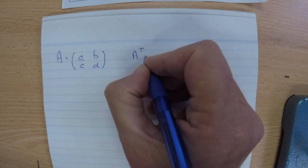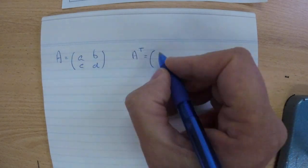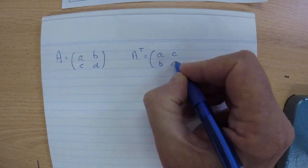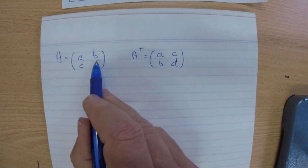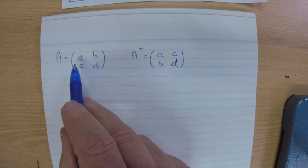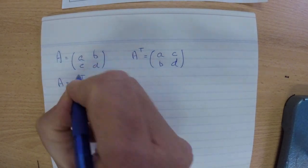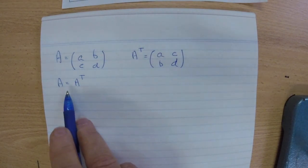And now we'll write the transpose. Remember the transpose - each row, the first row becomes the first column, and the second row becomes the second column. So what would we need in order for this matrix A to equal its own transpose? That's the property of a symmetric matrix.